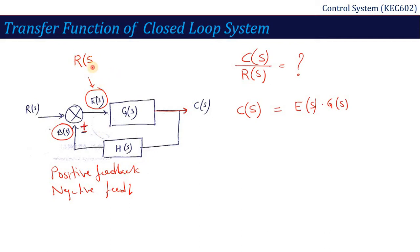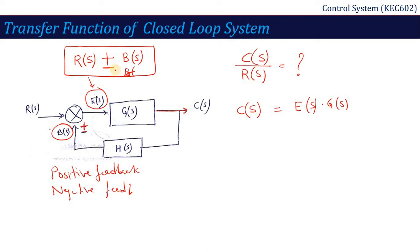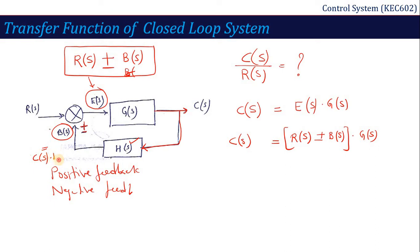So E(s) can be R(s) ± B(s). Since C(s) = E(s) × G(s), and B(s) = C(s) × H(s), substituting B(s): C(s) = [R(s) ± C(s)·H(s)] × G(s). This gives C(s) = R(s)·G(s) ± C(s)·H(s)·G(s).